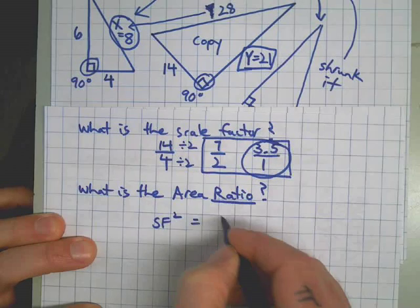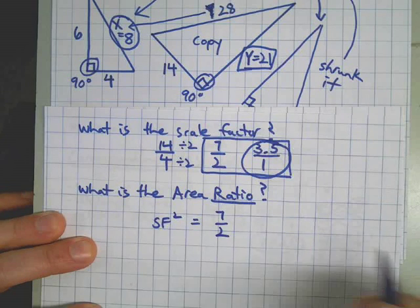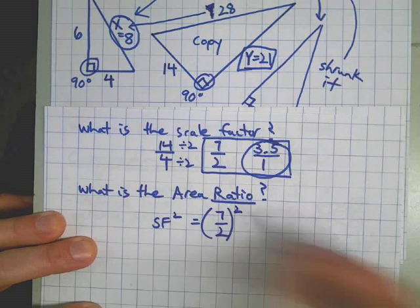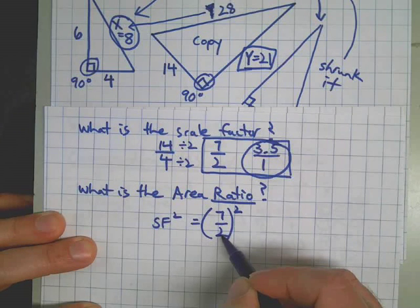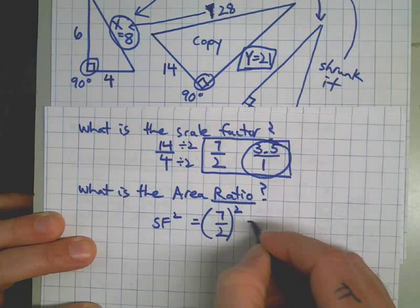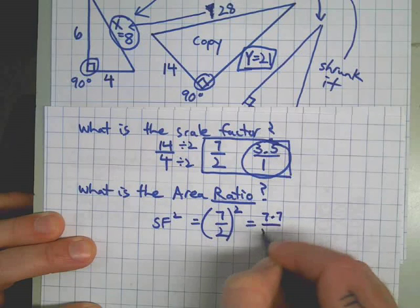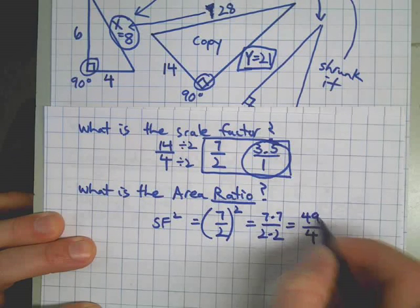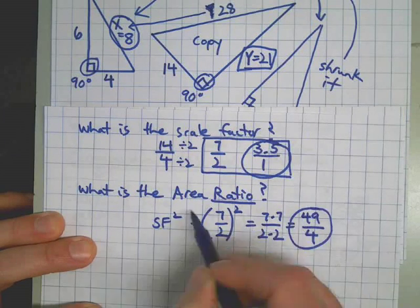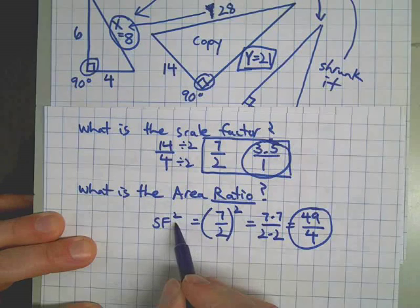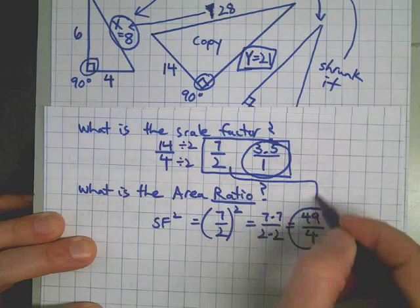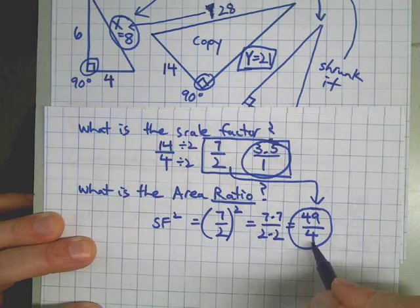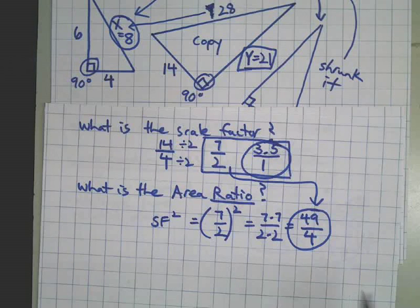So since my scale factor, I'm going to go with the 7 to 2 here - that makes more sense in this situation because when I'm squaring it, it's nice to have whole numbers, I know how to deal with them. 7 times 7, 2 times 2 - that's what squaring means, the number times itself. 49 over 4 - that is the area ratio. Scale factor squared. Scale factor was 7 to 2, area ratio is 49 over 4. That tells me that if we did have the area of one of the shapes, of the original, and we multiplied it by this, that would give us the area of the new shape.